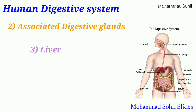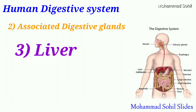Third, the liver. The liver is the largest gland in the body. It secretes bile juice, which is temporarily stored in the gallbladder. The bile duct from the gallbladder releases bile juice into the small intestine. Bile makes the food alkaline and helps in breaking larger fat globules into smaller ones for easier enzymatic action.